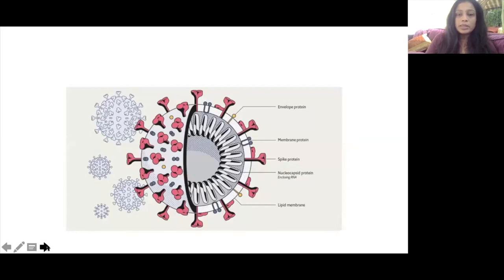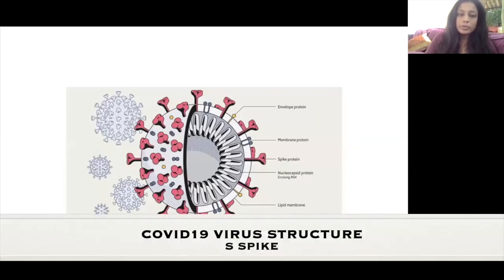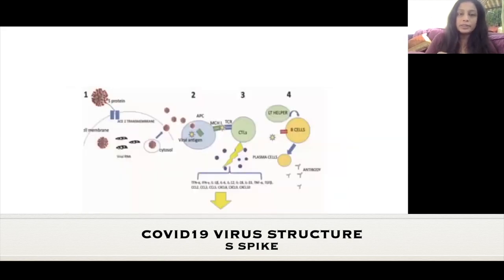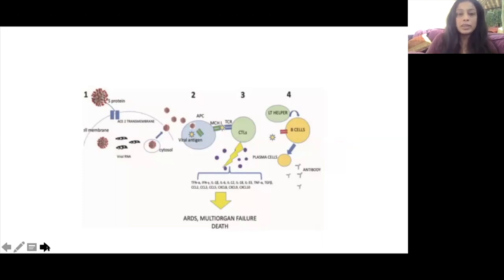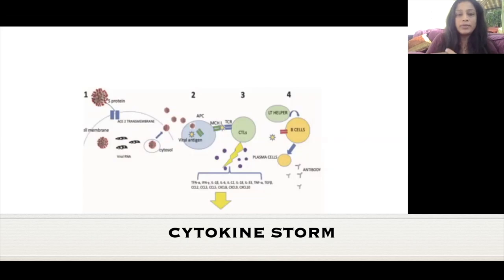COVID-19 has several structural parts: a membrane protein, an envelope protein, and a spike protein — these could be targets for medications and vaccines in development. There is a viral phase, much like flu, and a later stage that induces a cytokine storm or cytokine release syndrome (CRS), causing acute respiratory distress syndrome, multi-organ failure, and death. A cascade of cytokines is released including TNF, interleukin-1, and IL-6, with IL-6, IL-1, and TNF being the main therapeutic targets.